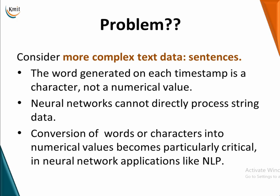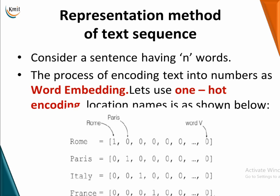Consider more complex text data where you have sentences. The word generated at every time step is a character, not a numerical value — you cannot represent it as a scalar. Neural networks cannot directly process string data. You have to convert words or characters into numerical values, which becomes particularly critical in neural network applications where you work with NLP. That's why you require a representation method for text sequences.